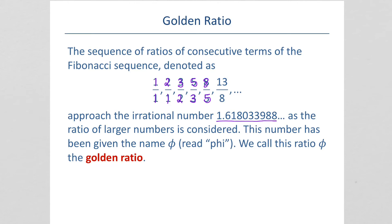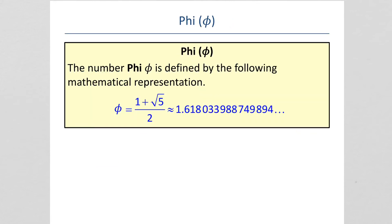Something even crazier. It's really interesting, all the stuff that happens. As the ratio of larger numbers is considered, it approaches 1.618033988. It keeps going. This number has been given a name, like pi or E. It's phi. P-H-I is said phi, just like F-I. And that number, phi, is the golden ratio. You can find phi by this little formula. It's 1 plus the square root of 5 divided by 2.